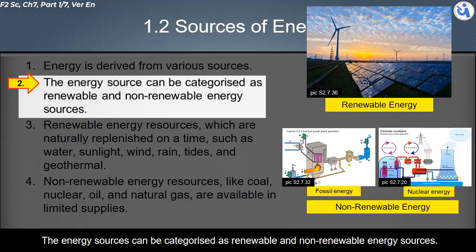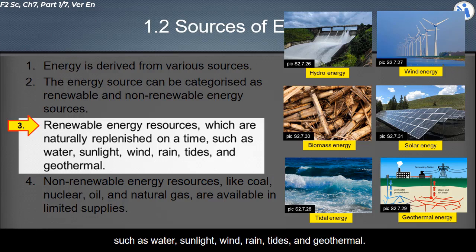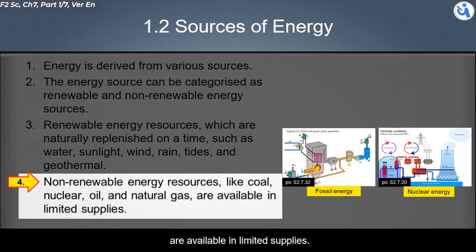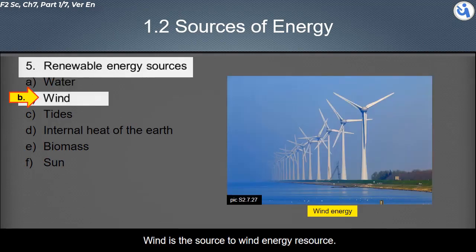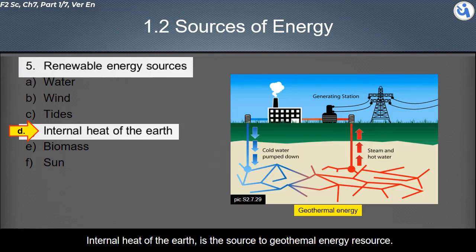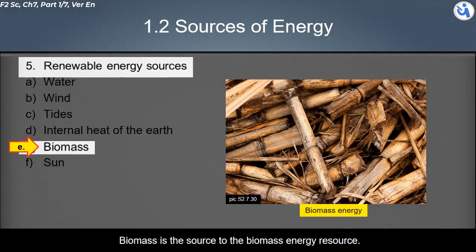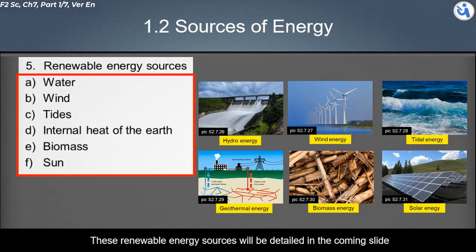Energy sources can be categorized as renewable and non-renewable. Renewable energy resources are naturally replenished over time, such as water, sunlight, wind, rain, tides, and geothermal. Non-renewable energy resources like coal, nuclear, oil, and natural gas are available in limited supplies. Renewable sources include hydro energy from water, wind energy from wind, tidal energy from tides, geothermal energy from Earth's internal heat, biomass energy from waste material of plants or animals, and solar energy from sunlight.